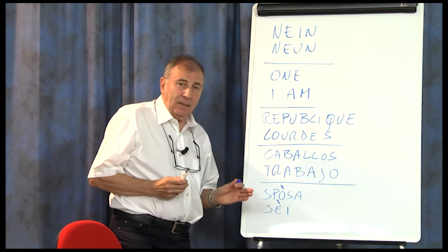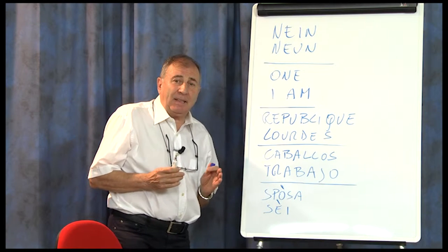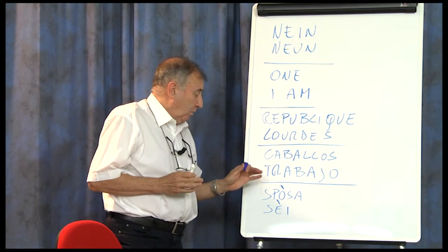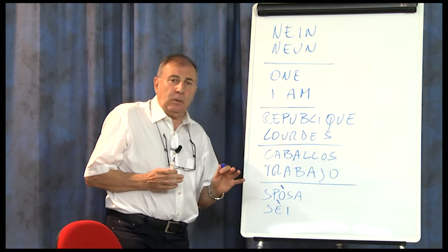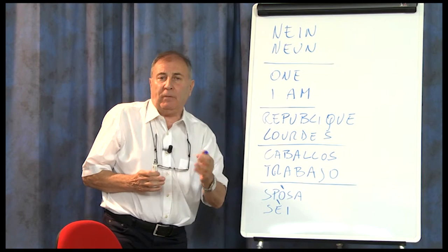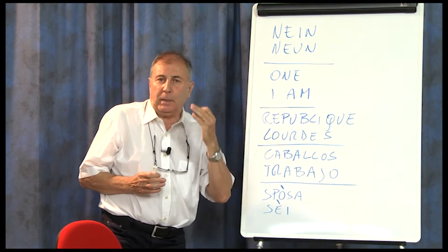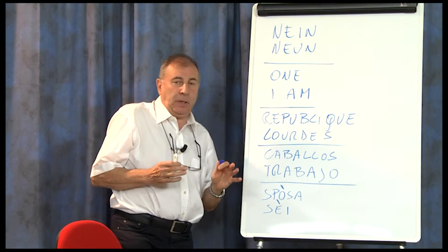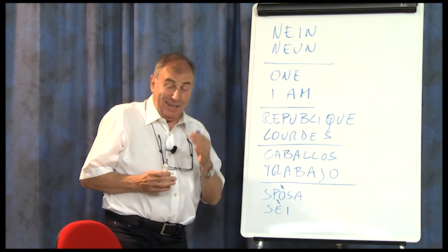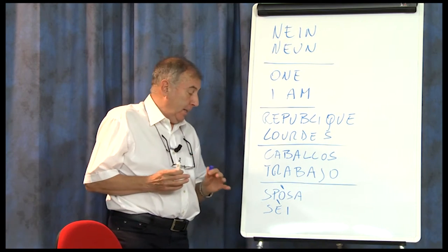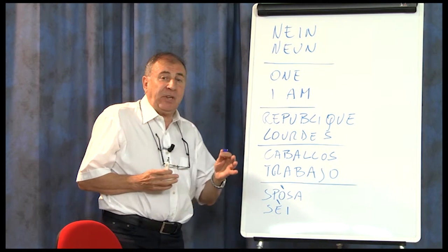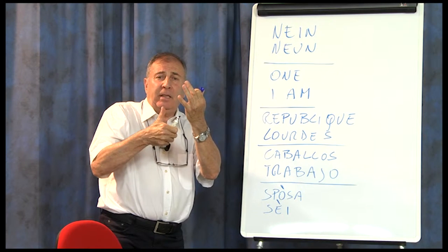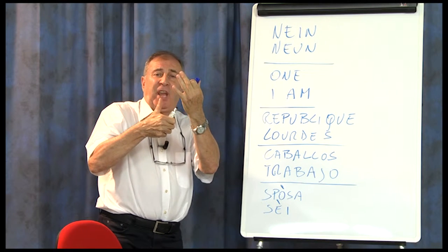Sposa e sei diventano, per il dialetto — perché chiaramente adesso mi interessa il dialetto — sposa in italiano in dialetto diventa 'spösa', ve l'ho già detto qualche puntata fa. Sei, che può essere 'tu sei', voce del verbo essere, ma anche 'sei' come numero cardinale, diventa 'sei'. Ecco qua: 'sei dita', 'sei dei', 'sei'.